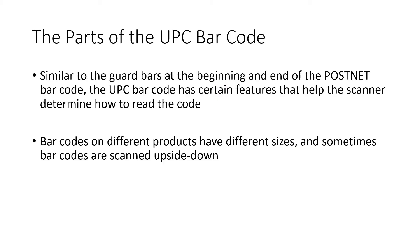Similar to the PostNet code that we talked about in the previous lecture, a UPC barcode has features that help a scanner read it without errors. There are guard patterns at the beginning and end, and other features that allow the scanner to read the code even if it's a different size or if the code is being held upside down. If you imagine being at the grocery store, you're not always holding the objects you're scanning in the exact same orientation.